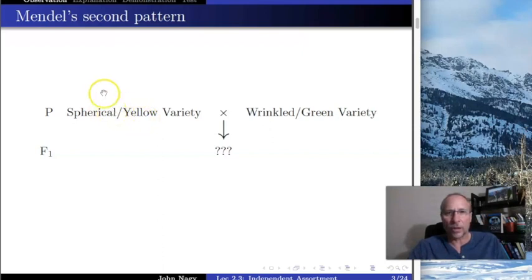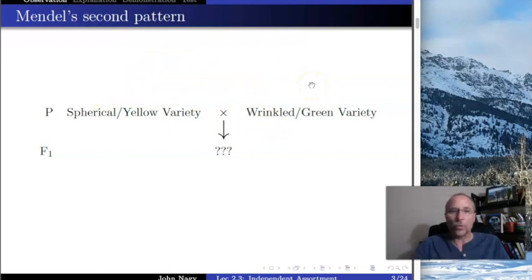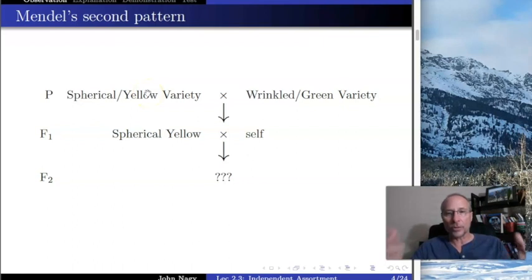Now, are these traits connected? If they are, spherical would somehow have to be connected to yellow, and wrinkled to green. Either way — whether connected or not — you would predict in the F1 that you get spherical yellow, because spherical dominated wrinkled and yellow dominated green. He does this experiment with about 7,000 plants and gets exactly that: spherical yellow plants, just as spherical and just as yellow as the original parent.